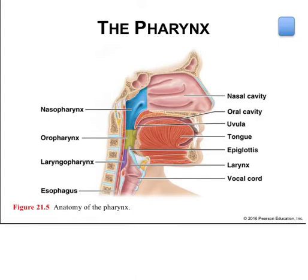The pharynx is the next anatomical segment of the respiratory tract that inspired air enters after exiting the nasal cavity, and it's split into three anatomical divisions. The nasopharynx, behind the nose, is lined with pseudostratified ciliated columnar epithelia for warming, humidifying, and filtering inspired air. It runs from the posterior nares to the uvula.